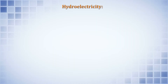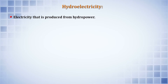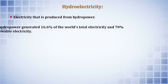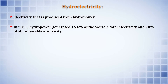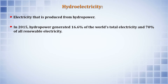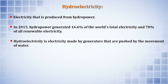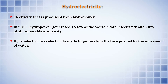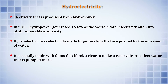Hydroelectricity is electricity produced from hydropower. In 2015, hydropower generated almost 16% of the world's total electricity and 70% of all renewable electricity.